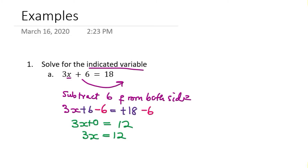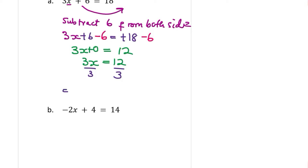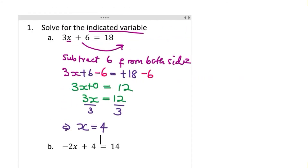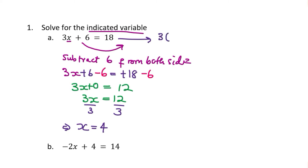The next step is to divide both sides by 3 in order to isolate x. Dividing both sides by 3 results in x = 12 ÷ 3, which gives you 4. To check: put 4 back into the original equation. 3 times 4 gives 12, plus 6 gives 18. Yes, x = 4 makes this equation true.